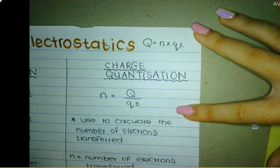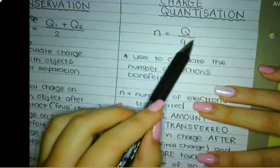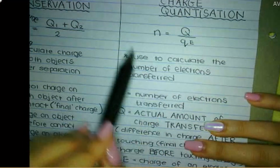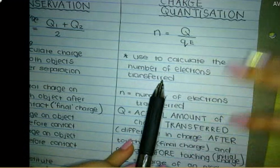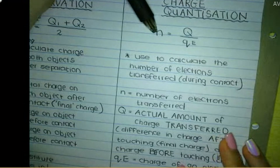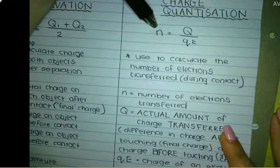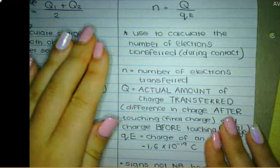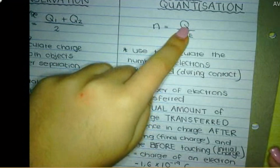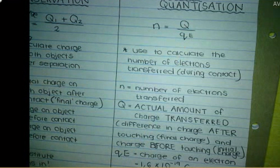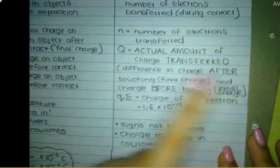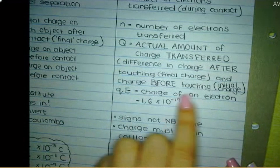If that doesn't make sense to some of you, do not stress — it's just for those who are interested. We're going to be using the formula in the form N equals Q over QE to calculate the number of electrons transferred during contact. N stands for the number of electrons transferred. Q is the actual amount of charge transferred — it's the difference in charge after touching and before touching. QE is the charge of an electron.